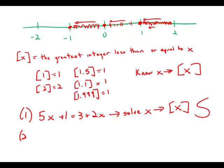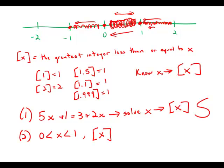Now forget statement number 1. Statement number 2 tells us that x is between 0 and 1. If x is between 0 and 1, it's in this piece of real estate on the number line — between the integer 0 and the integer 1. For any number in this region, the largest integer that is still smaller than it is the integer all the way on the left, which is 0. So if x is between 0 and 1, then the greatest integer function of x would equal 0. This statement is also sufficient for answering the question.